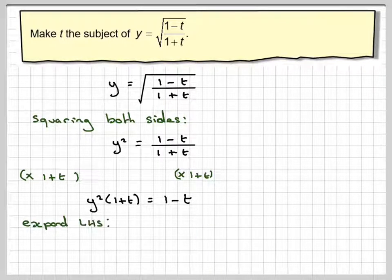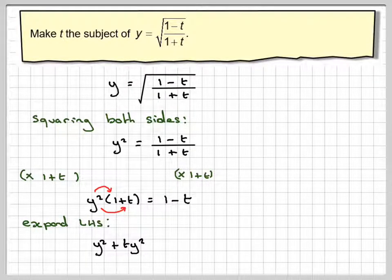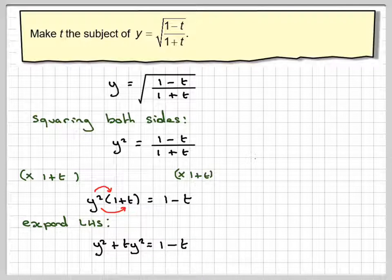Expanding the left-hand side, we get y squared plus ty squared is equal to 1 minus t.